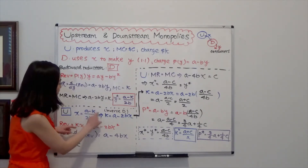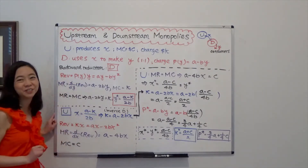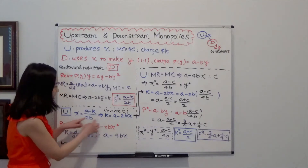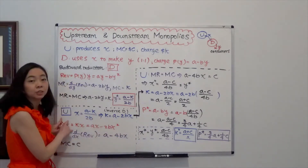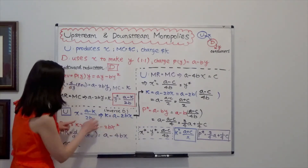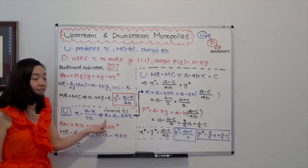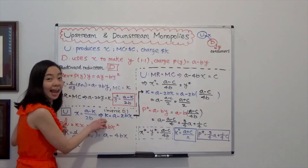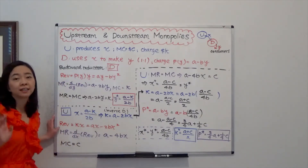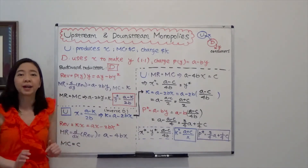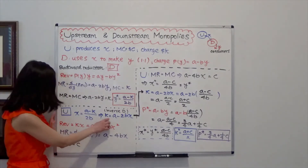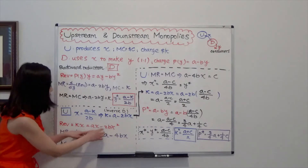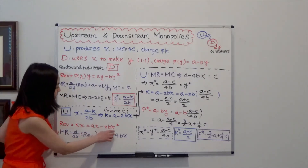Remember, K is the price that Company U is going to charge Company D for their input X. So K is really the price of the input X. You can write K as a function of the quantity X that Company U is going to produce, so K is equal to A minus 2BX. And notice that this is the inverse demand function for Company U, because K is the price we're going to charge — that's the price of X. Knowing that, we are able to find the revenue function for Company U. Revenue is price times quantity. My price is K, so K times X will be the revenue. But then I also know K is equal to A minus 2BX, so multiplying that out, my revenue function is equal to AX minus 2BX squared.